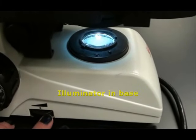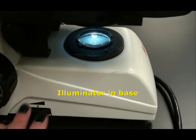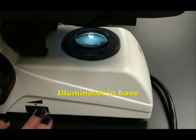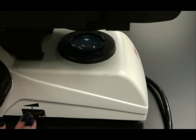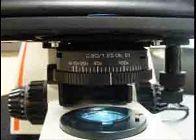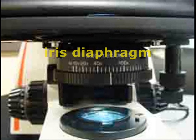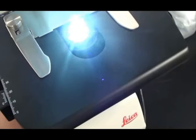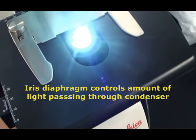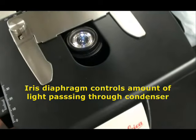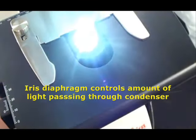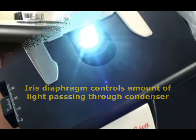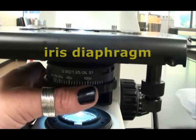Most compound light microscopes have a dial that will adjust the light level from the illuminator in the base. Another way that your scope allows you to adjust the amount of light shining up through the specimen is through manipulation of the iris diaphragm. This mechanism is located directly beneath the stage, and you twist it to open and close the iris.